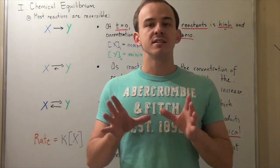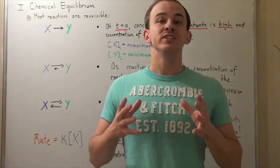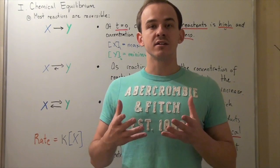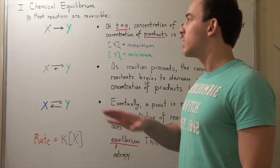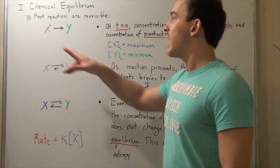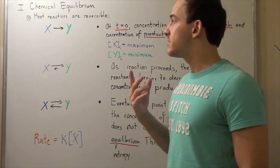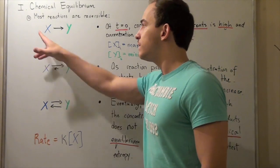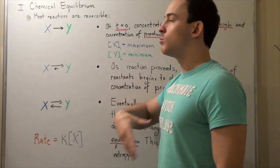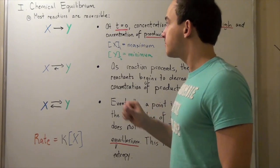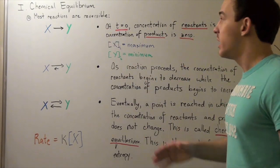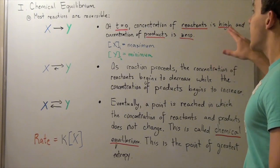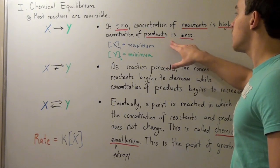Today, we're going to talk about the concept of chemical equilibrium or dynamic equilibrium. Let's look at the following hypothetical reversible first-order elementary reaction in which X converts to Y in a single step. At time equals zero, the concentration of our reactants is very high and the concentration of our products is very low.